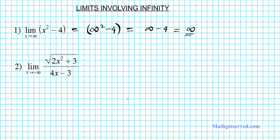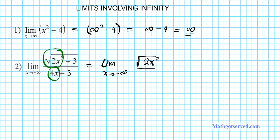Let's take a look at question number two. We have a square root of a polynomial function divided by another polynomial function, and we're looking for the limit as x approaches negative infinity. Anytime you're dealing with a quotient of two polynomials, it's beneficial to consider growth rates at infinity. In the numerator, the fastest growing term is 2x squared, so we're going to consider the square root of 2x squared. In the denominator, the fastest growing term is 4x.